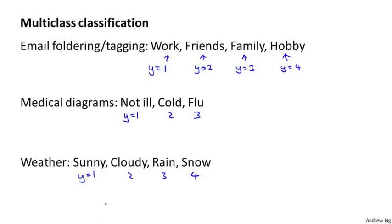And these are multi-class classification problems. And by the way, it doesn't really matter whether we index this as 0, 1, 2, 3, or as 1, 2, 3, 4. I tend to index my classes starting from 1, rather than starting from 0, but either way works, and it really doesn't matter.